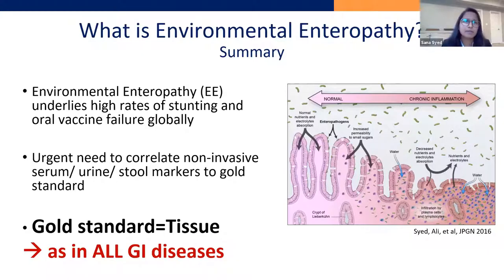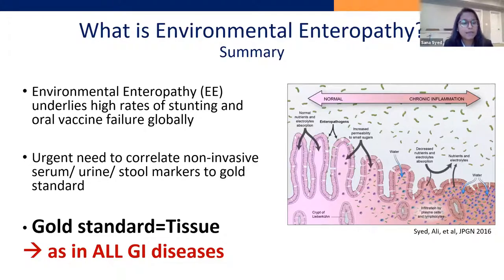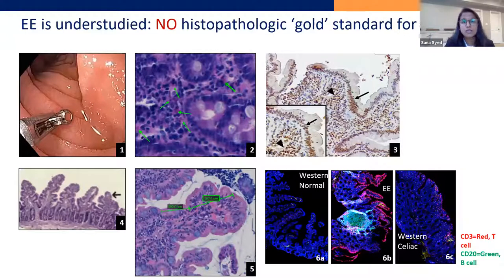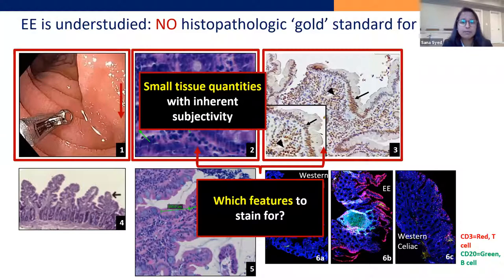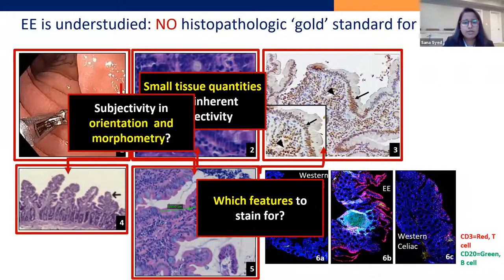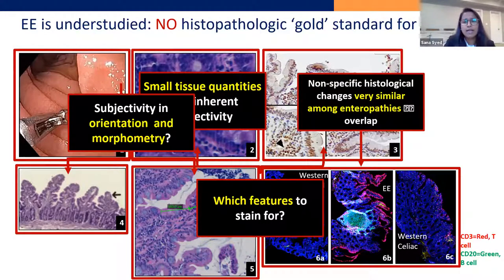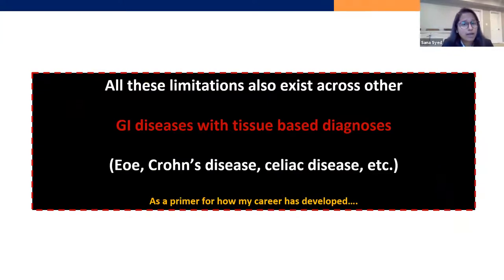There's a really urgent need to figure out, for example in rotavirus or COVID immunization campaigns, which children will likely not respond to vaccines and need additional boosters, and whether there's a blood, stool, or urine marker. The problem is the disease exists inside the gut, so the gold standard is tissue diagnosis. EE specifically is understudied — there's actually no histopathologic gold standard for diagnosis. The endoscopy involves taking tiny two-to-three millimeter biopsies, and the problems include small tissue, subjectivity in how we section and stain, and overlap between enteropathies such as celiac in the US and environmental enteropathy. These challenges exist across other GI diseases with tissue-based diagnosis.